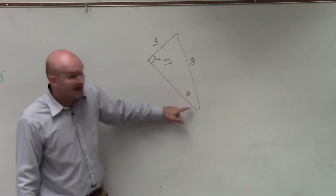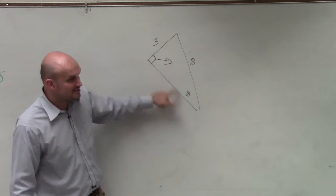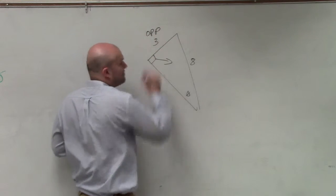Then, if here's my theta, the side length that connects theta and 90 degrees is my adjacent. So therefore, this is my opposite side.